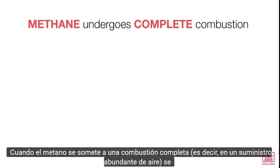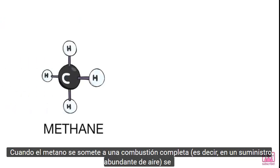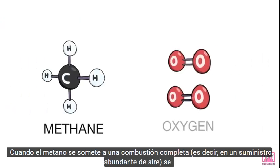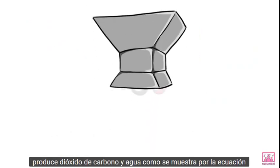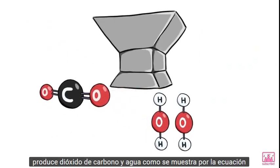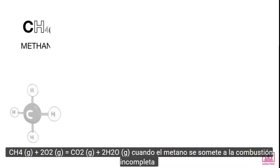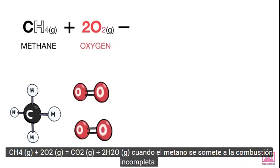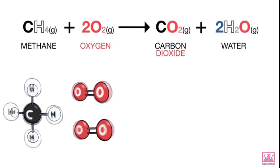When methane undergoes complete combustion, that is in a plentiful supply of air, it produces carbon dioxide and water. As shown by the equation: CH4 (g) + 2O2 (g) → CO2 (g) + 2H2O (g).